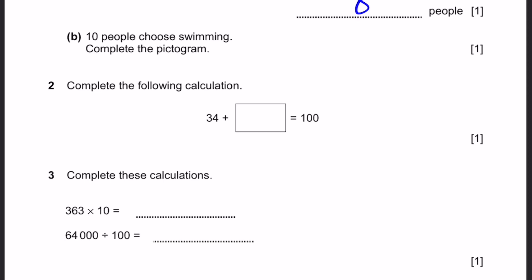Question 2. Complete the following calculation: 34 plus dash equals 100. Bring 34 to the other side. 100 minus 34 equals 66. Question 3. Complete these calculations: 363 into 10 is 3630. 64,000 divided by 100 is 640.